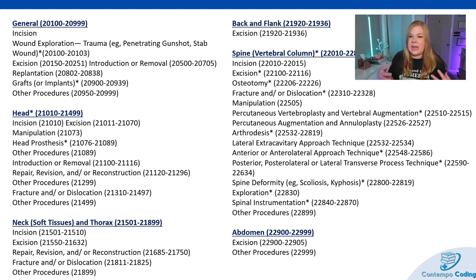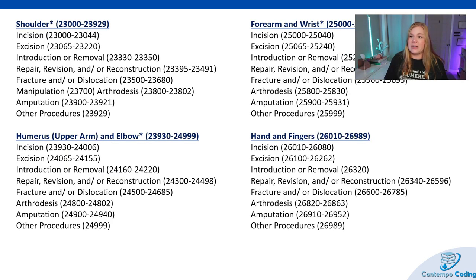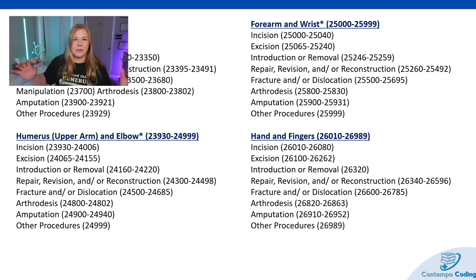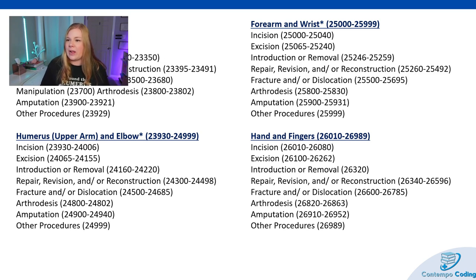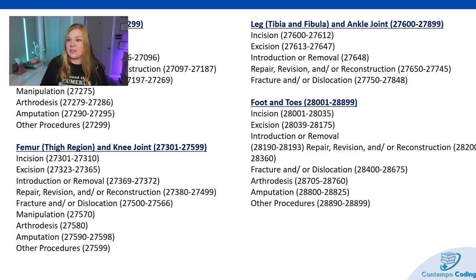With the neck, we have incision, excision, repair, revision, or reconstruction, fracture, and/or dislocation, and other procedures. Similar procedure types apply to the humerus and elbow, forearm and wrist — incisions, excisions, repairs, manipulations, fractures, amputations, and some arthrodesis. Hands and fingers: incisions, excisions, repairs, revisions, fractures, amputations. Pelvis and hip joint, the femur — same kind of thought process. For legs: incision, excision, introduction or removal, repair, revision, or reconstruction, as well as fracture and dislocation.